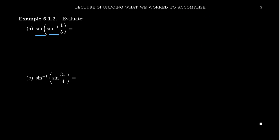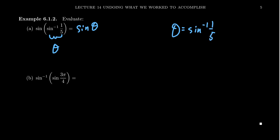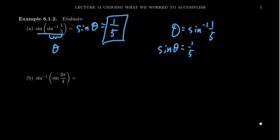Taking this principle further, let's try sine of sine inverse of 1/5. Think of the inverse trig function as an angle θ — we're computing sine of θ where the angle is given by sine inverse of 1/5. Since sine inverse of 1/5 equals θ, that tells us sin(θ) = 1/5. So evaluating sine of that angle gives 1/5. These are inverse functions, so they cancel each other out — like adding 2 and then subtracting 2, or putting your shoe on and taking your shoe off. The net effect is as if nothing happened.